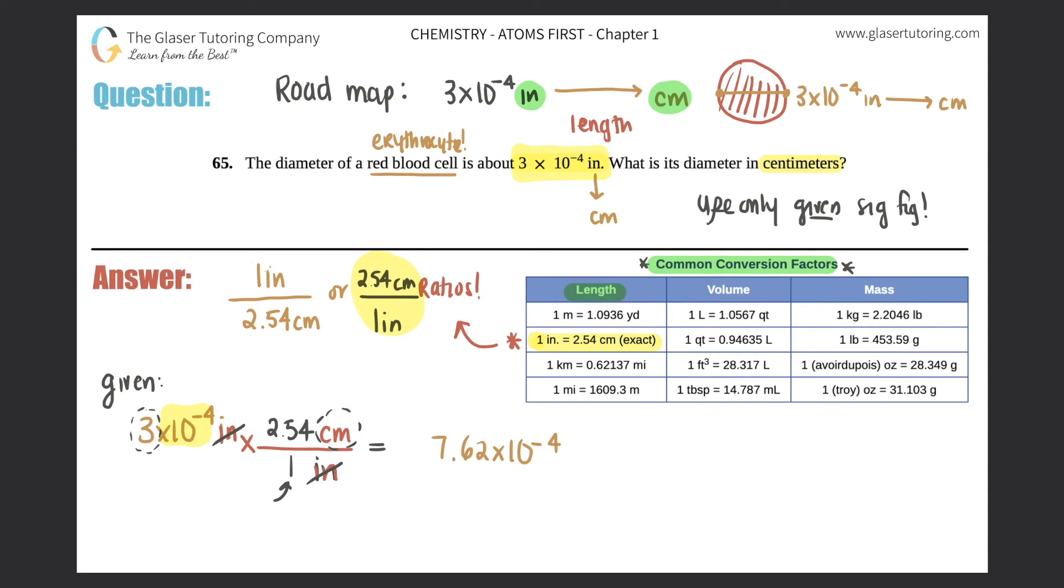Now remember, × 10⁻⁴ has nothing to do with sig figs. We just take the number in the front, and in this case the 3 is the only number that counts, so it's 1 sig fig. So this answer has to be turned into 1 sig fig. I'll keep the 7, and the 6 tells me to round that 7 to an 8 because 6 is 5 or greater.